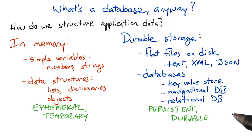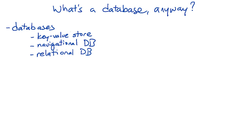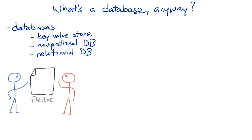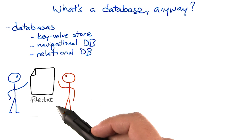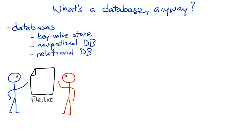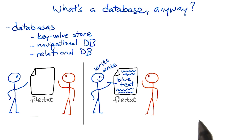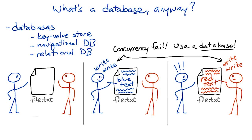Well, there are several different kinds of databases. What they all have in common is that they give us both persistence, like a file, as well as data structures for storing and searching our data — usually much faster and easier than we could search a flat file. They also make it possible for multiple programs or users to access and modify data at the same time without stepping on each other's toes or accidentally undoing each other's changes. That's generally not possible with flat files. If two programs write a new version of a file at the same time, then one will overwrite the other.